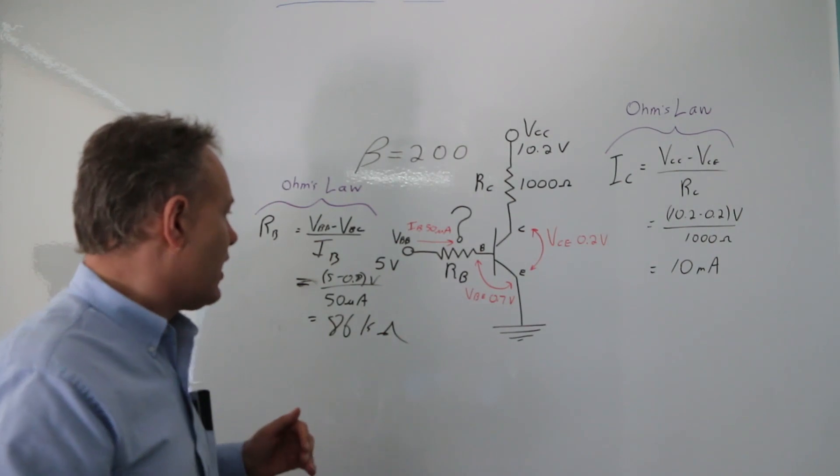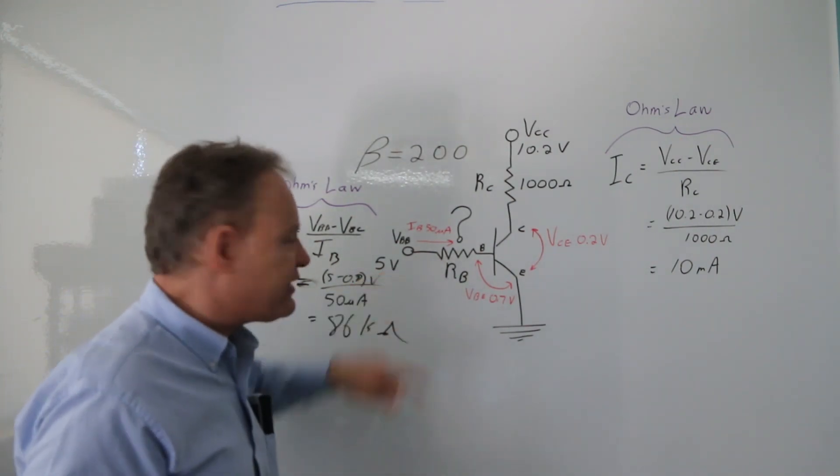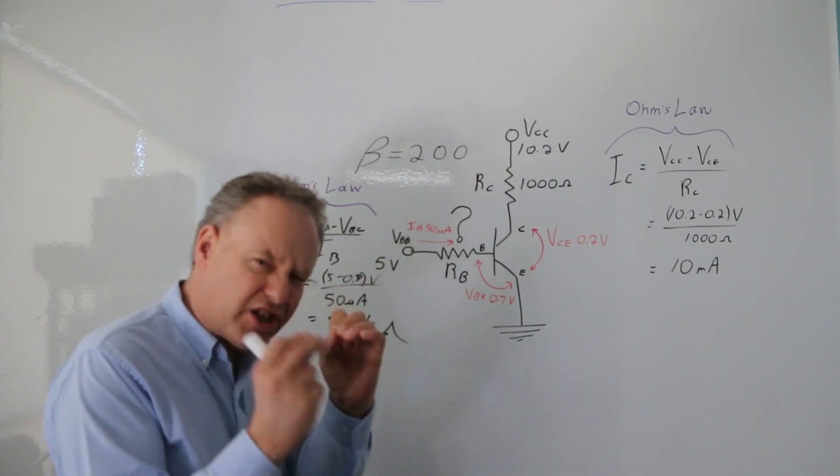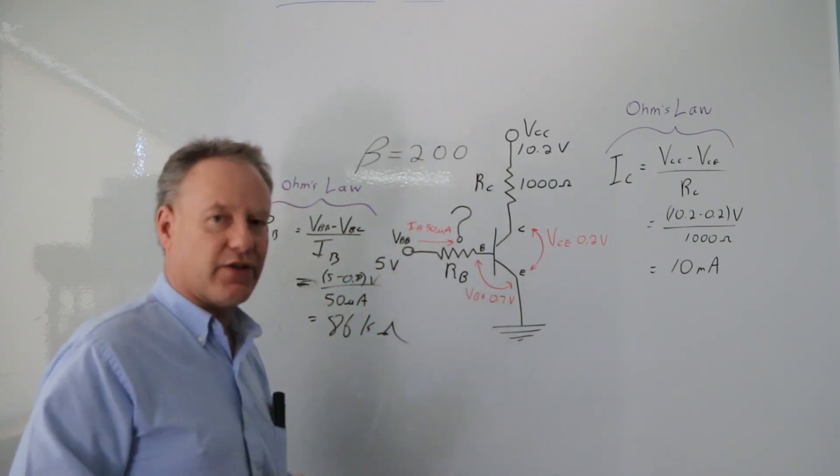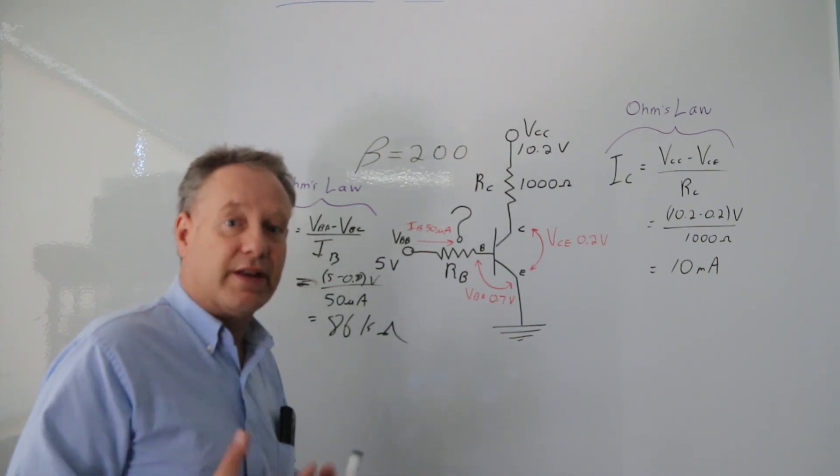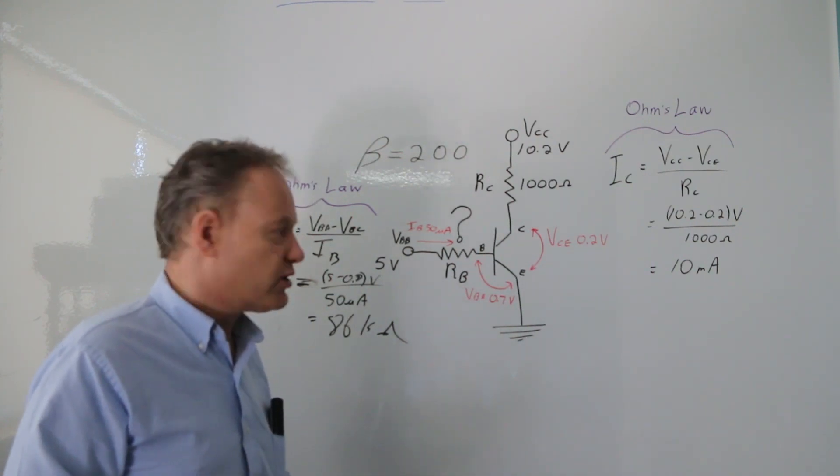Yeah, it is 86 kilo-ohms. So now essentially, if I put an 86 kilo-ohm resistor there, exactly that much, then I'd have exactly just enough current to fully saturate that. But what I want to do is make sure that I have more current than I need to fully saturate that.